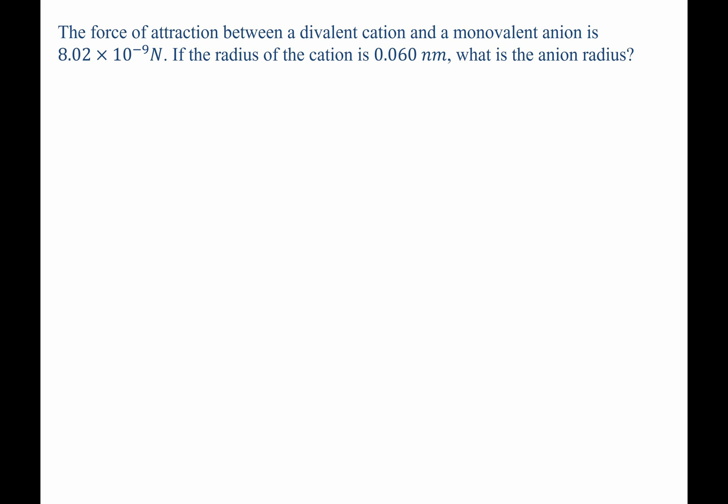In this problem, the force of attraction is given between a divalent cation and a monovalent anion as 8.02 × 10^-9 N. Additionally, we are told that the radius of the cation is 0.06 nanometers, and we are asked to solve for the anion radius.